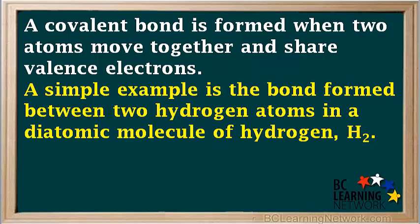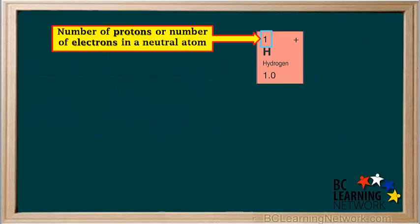A simple example is the bond between two hydrogen atoms in a diatomic molecule of hydrogen, H2. Recall that the number on top of the symbol for an element in the periodic table is the atomic number, which is the number of protons. It is also the number of electrons in a neutral atom of the element.